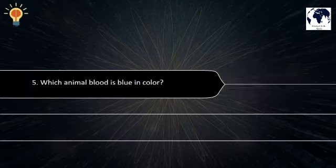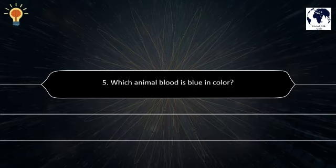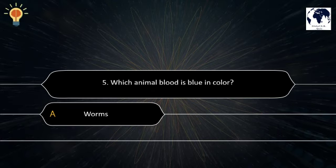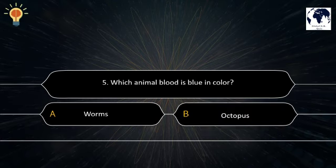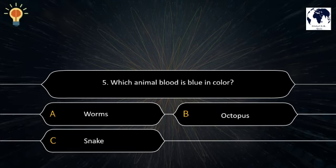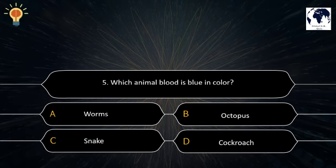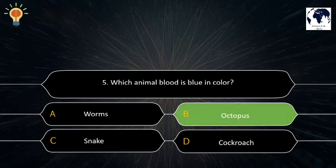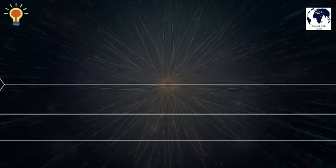Question number 5. Which animal's blood is blue in color? Option A: Worms. Option B: Octopus. Option C: Snake. Option D: Cockroach. The correct answer is Option B — Octopus.